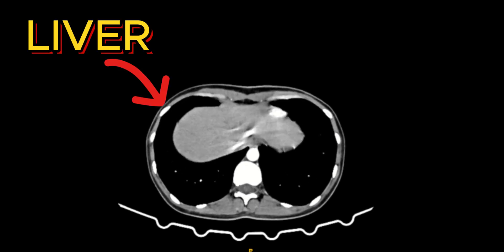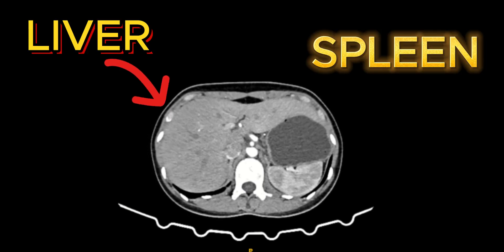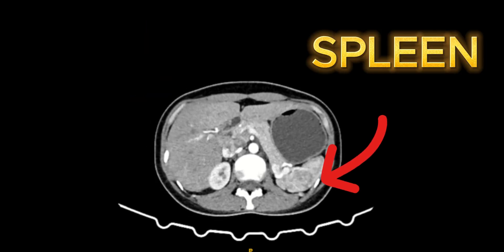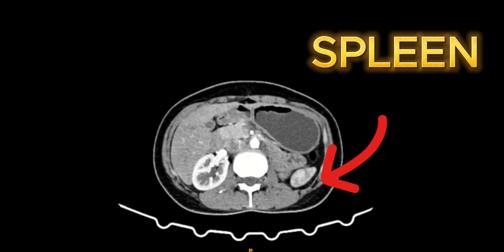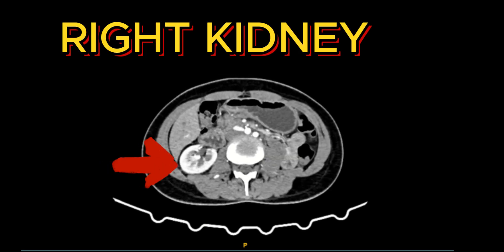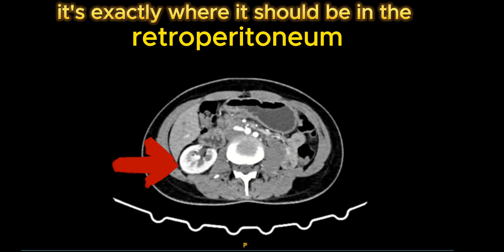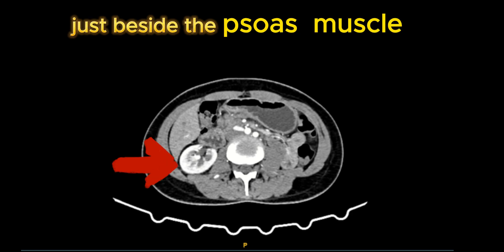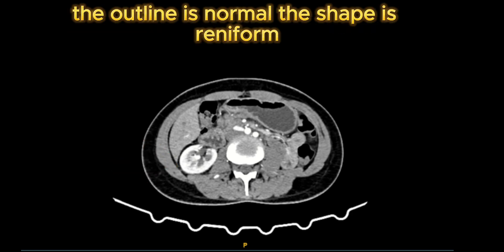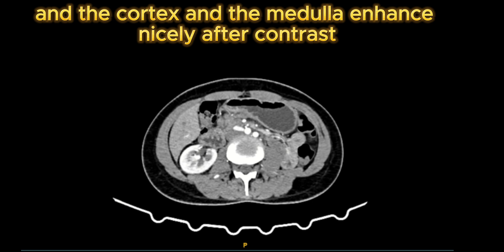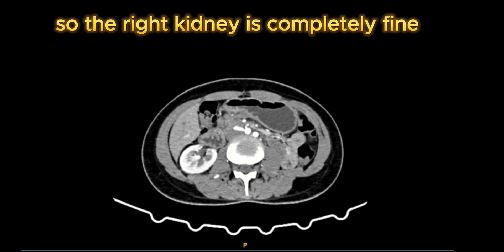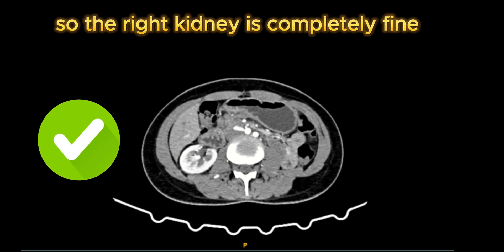Starting in the upper abdomen, here on the right side is the liver, and on the left side you can see the spleen. As we scroll further down, the right kidney comes into view. It's exactly where it should be, in the retroperitoneum, just beside the psoas muscle. The outline is normal, the shape is uniform, and the cortex and medulla enhance nicely after contrast. So the right kidney is completely fine.